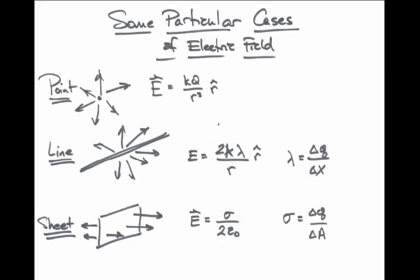Using the principle of superposition, it is possible to derive the electric field for a variety of charge configurations. The electric field from a point charge is simply k times the magnitude of that charge Q, divided by the distance squared, times the unit vector r-hat. For a line of charge, if we define lambda as the charge density (delta Q divided by length delta x, in coulombs per meter), then the electric field is 2k times lambda divided by r — not r squared, just r — times r-hat.